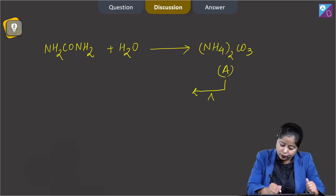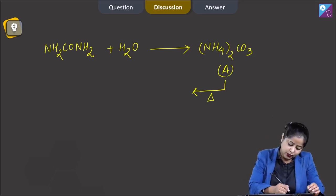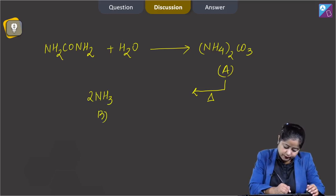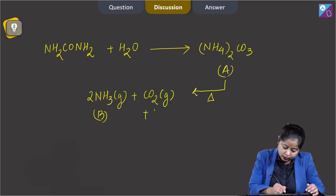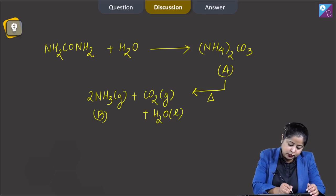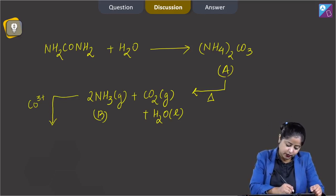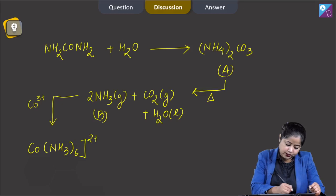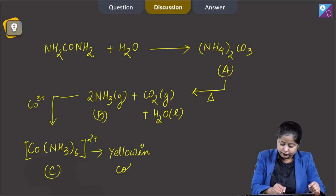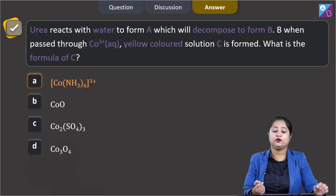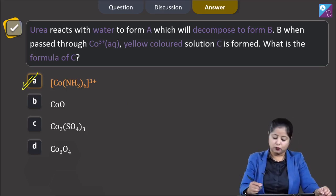Compound A on decomposition gives compound B, which is ammonia (NH3), along with CO2 and water. This ammonia on reaction with Co³⁺ forms compound C, which is [Co(NH3)6]²⁺, yellow in color. The final product is given in option A.